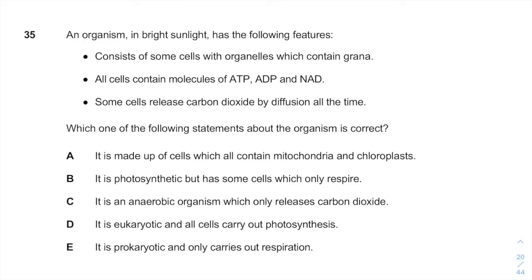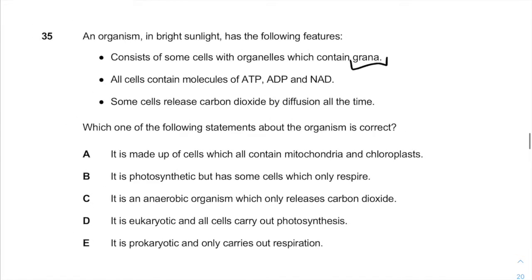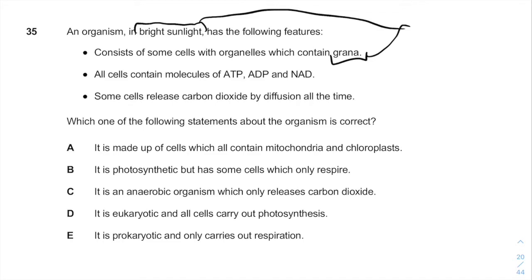An organism in bright sunlight has the following features. Consists of some cells with organelles which contain grana. Grana and bright sunlight should tell you that this organism can do photosynthesis.